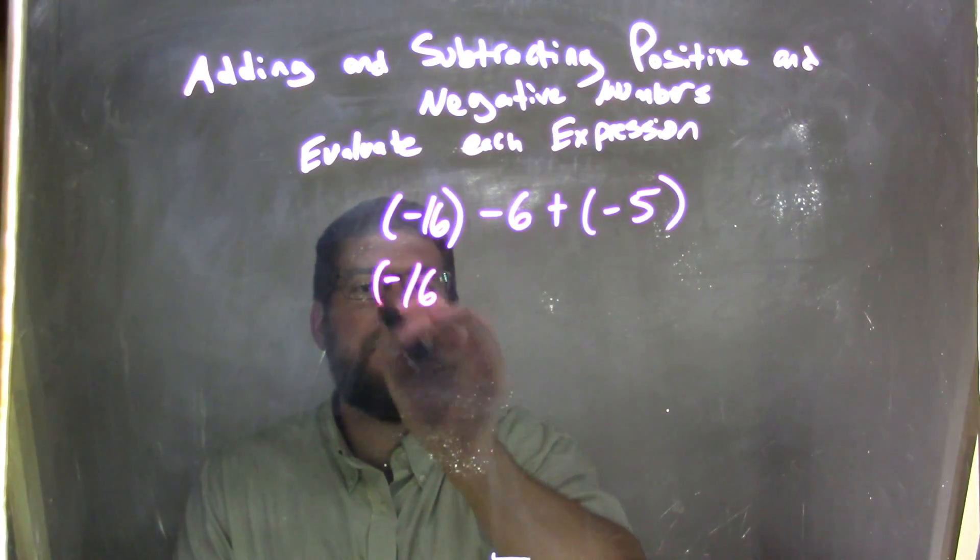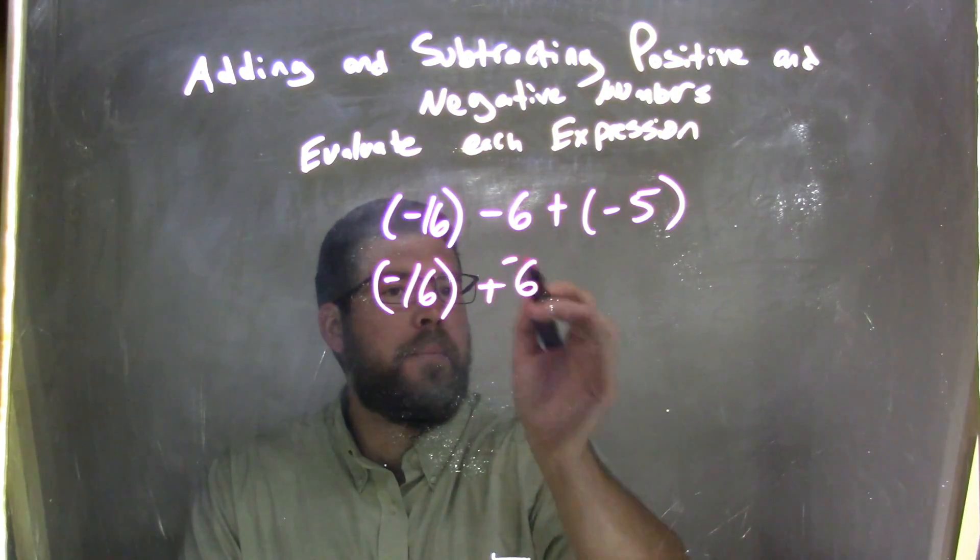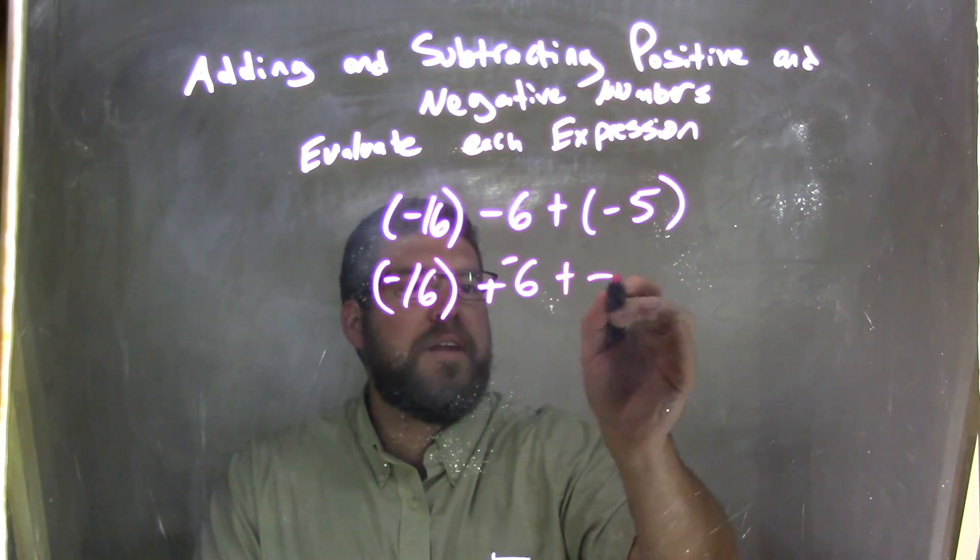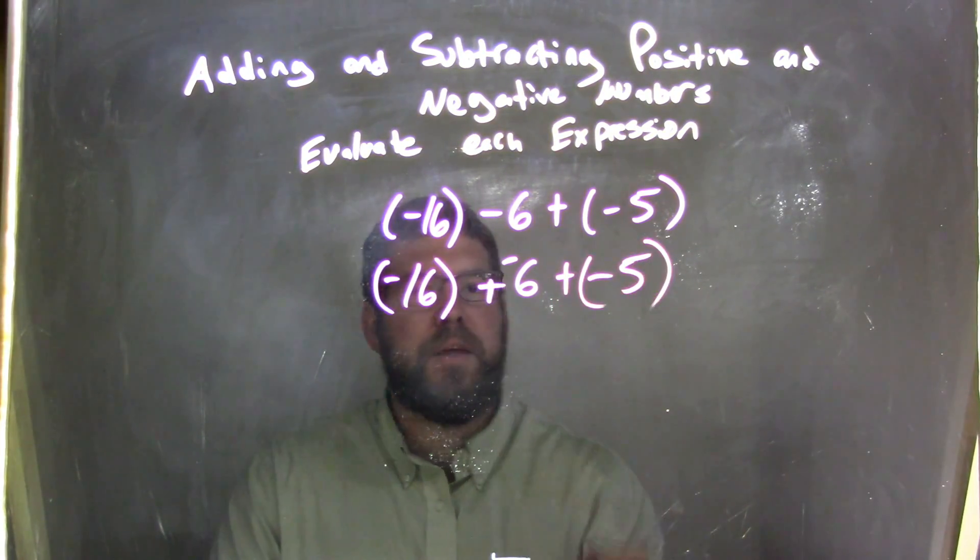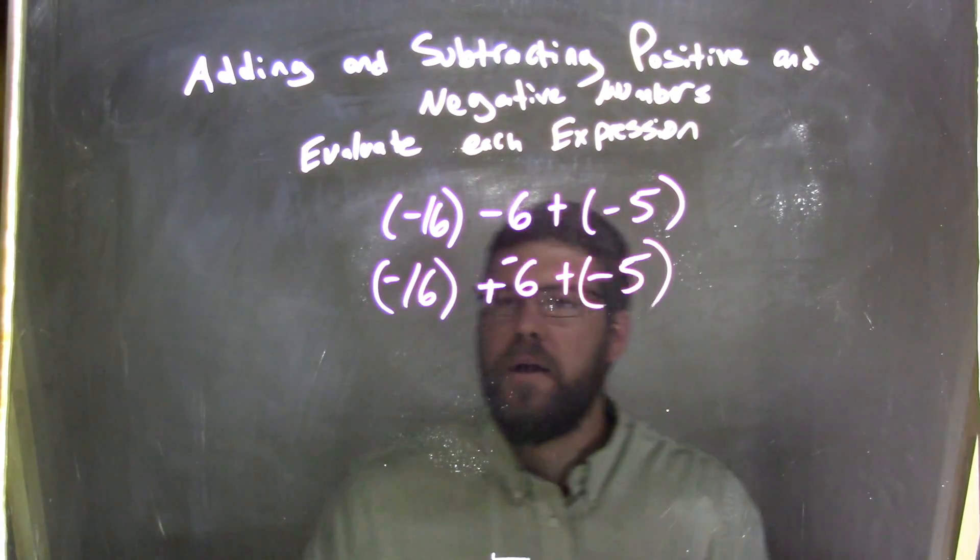Minus 6 means plus negative 6, plus negative 5. And I won't put parentheses, it'll be too cluttered up.